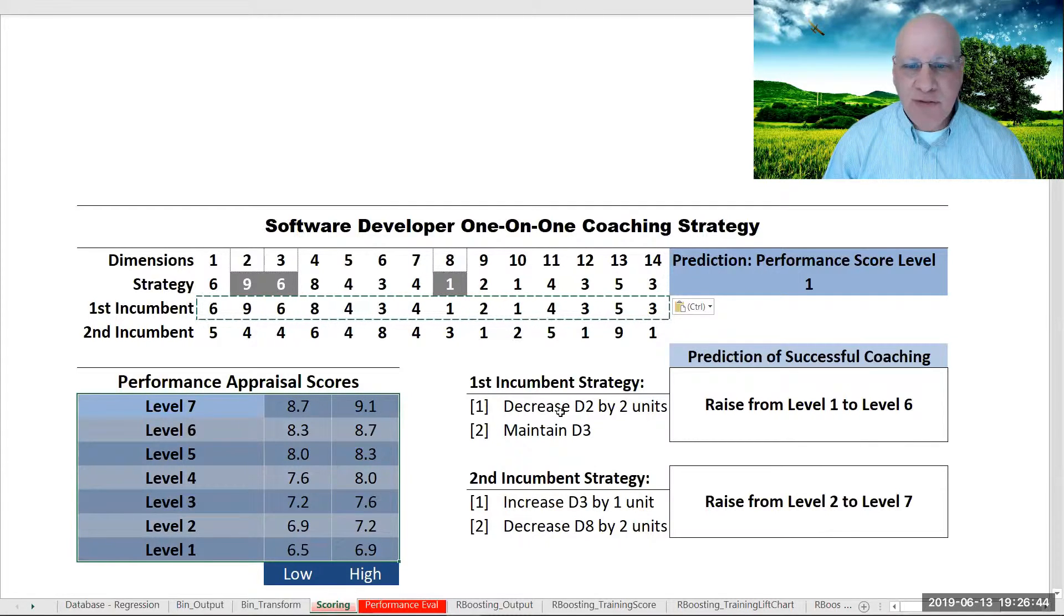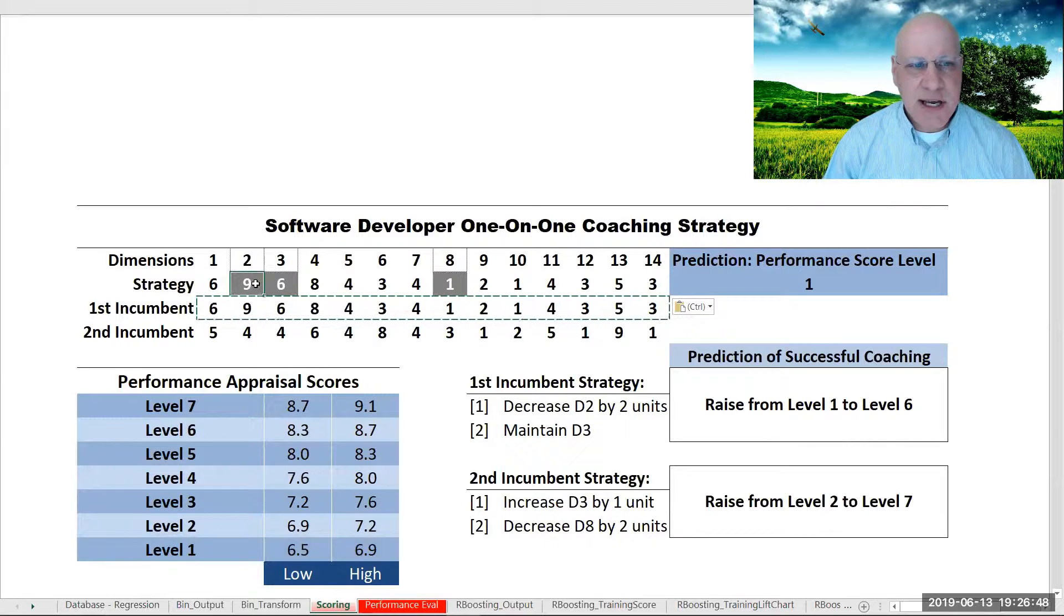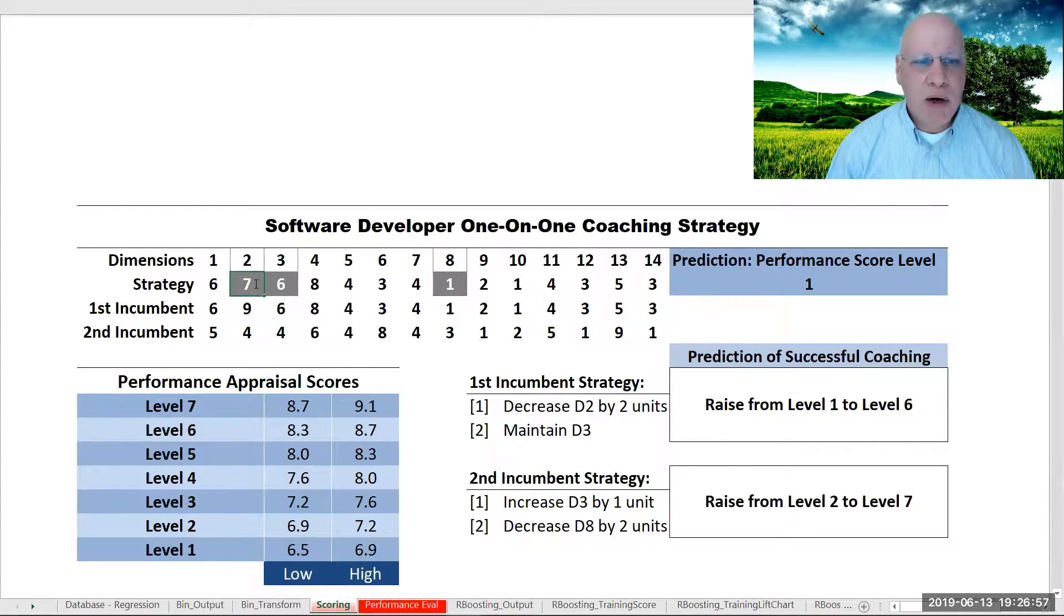So our first strategy is to decrease the intensity of this second dimension. Coaching would help the individual apply conscious effort and willpower to decrease that trait, and we go all the way from level 1 to level 6.